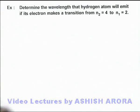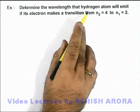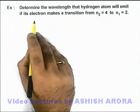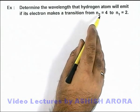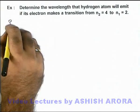In this example we are required to determine the wavelength that hydrogen atom will emit if its electron makes a transition from n₂ = 4 to n₁ = 2.